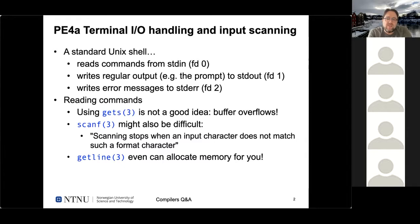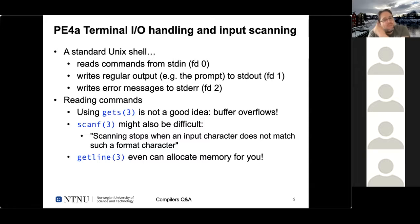A standard Unix shell reads commands from its standard input, file descriptor zero. When you do a read, gets, readline, or scanf, these all read from standard input, which can be redirected. The shell writes regular output — like your shell prompt — to file descriptor one, standard out. On Unix, there's a separate output channel for error messages called standard error. It's perfectly fine for your shell implementation to write error messages on the regular output, though a real shell keeps them separate.